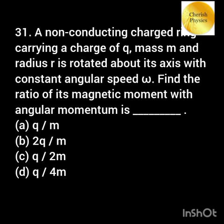A non-conducting charged ring is rotated with constant angular speed omega. Find the ratio of its magnetic moment to its angular momentum.